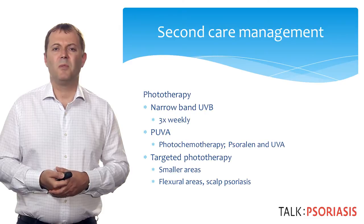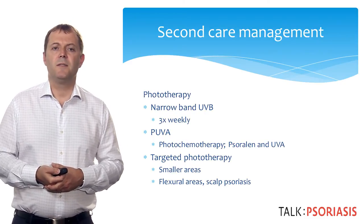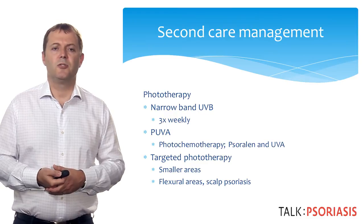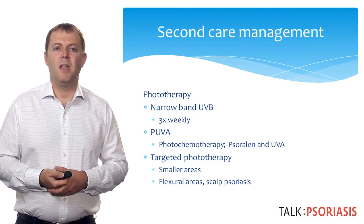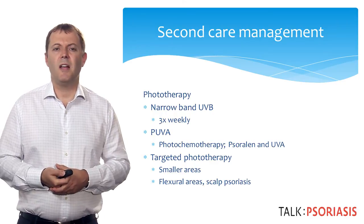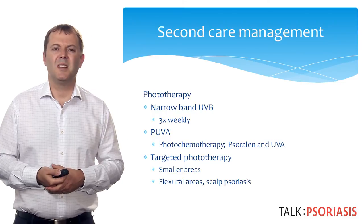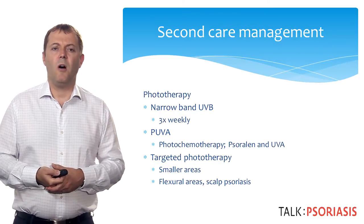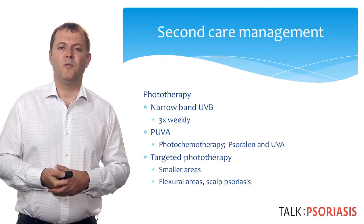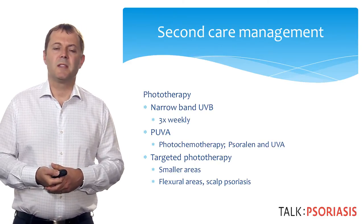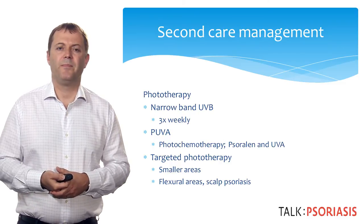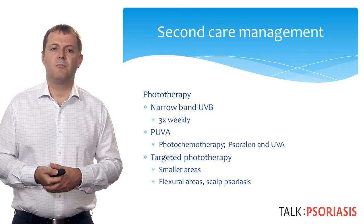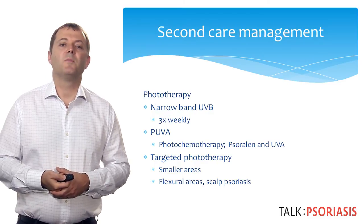If patients are not responding to topical corticosteroids or have widespread disease, second-line management is often warranted. Phototherapy is a very useful treatment for chronic plaque psoriasis. Narrowband UVB given three times a week for around six to eight weeks has around 75% efficacy in treating plaque psoriasis. More traditional methods include PUVA, where an oral photosensitizing agent is given two hours before UVA exposure, given twice a week but with more side effects. Targeted phototherapy may be useful for more limited disease or areas that are hard to reach, such as flexural areas or scalp psoriasis.